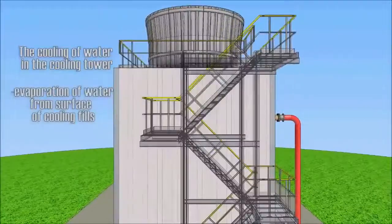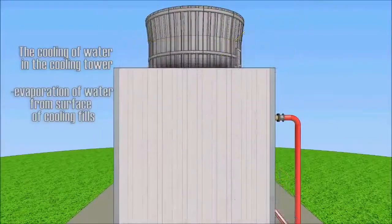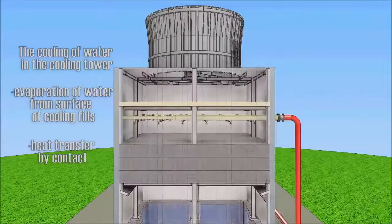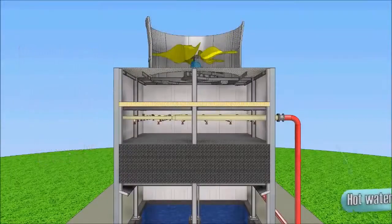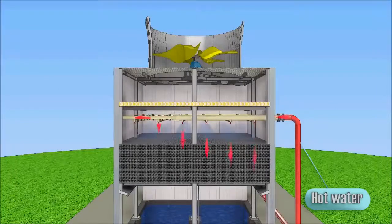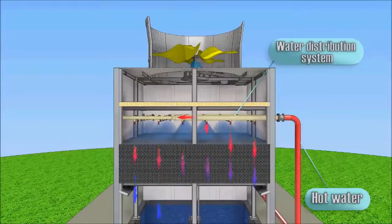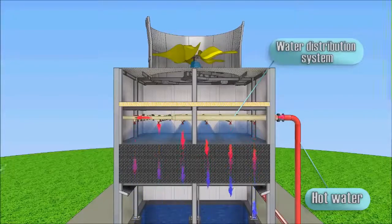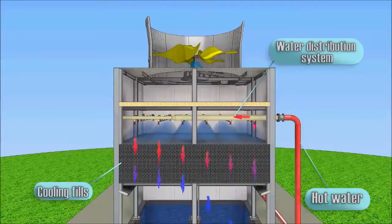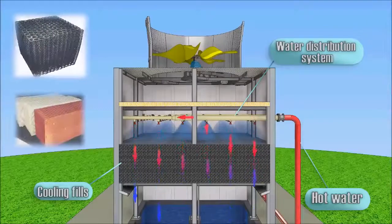Heat transfers by contact with air. Hot water from various sources such as machines or heating processes flows through pipes to the distribution system of the cooling tower, which produces even water distribution to all the area of fills by spray nozzles. On the fills, a water film is formed.